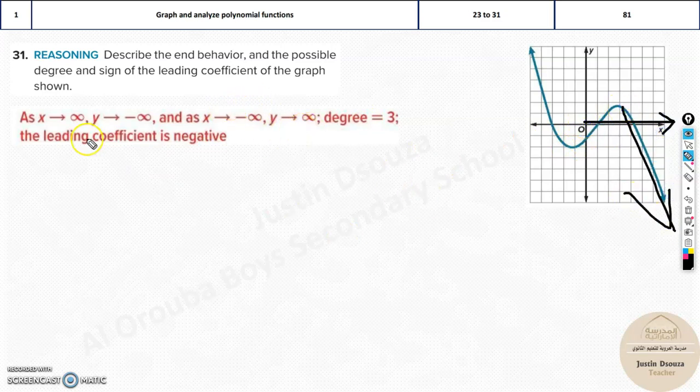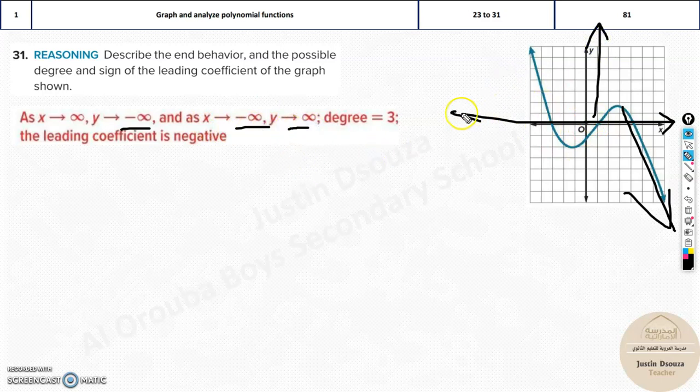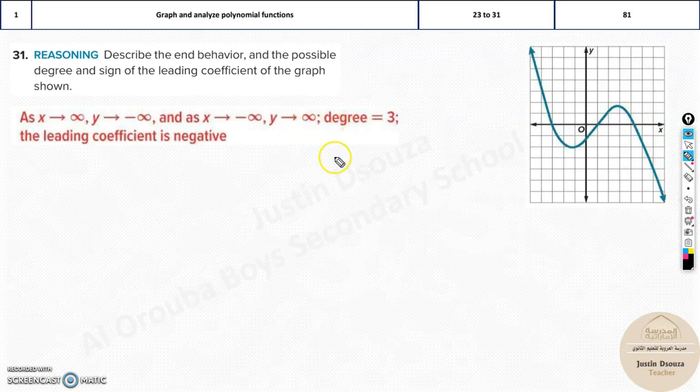Now, we are, as it is positive infinity, the y value, it's negative. It's negative infinity. And as x goes to the left side, that is negative infinity, y is positive infinity. And now, we need to check what is the degree and the coefficient. Now, this is a cubic graph. You know, this is a cubic graph.